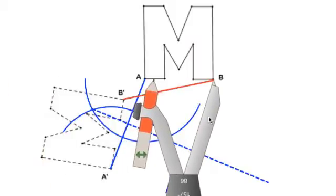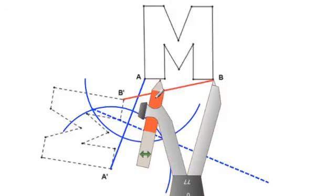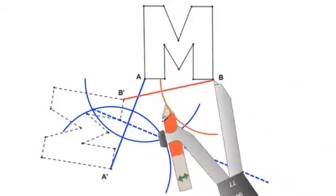Stretch your compass a little more than halfway and swing arcs above and below the line on both sides.